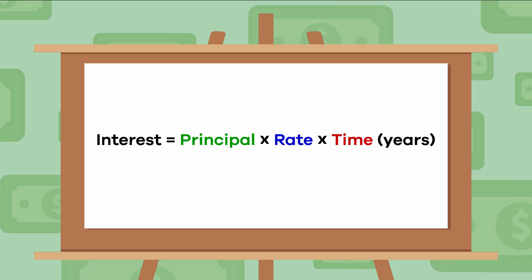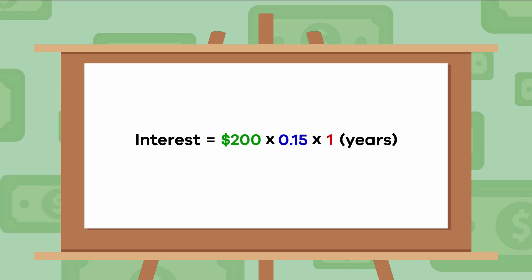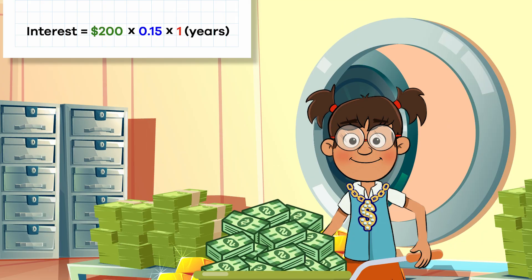Now we are ready to use the equation. First, we know that the principal amount, or the amount that Frankie started with, is $200. Next, we know that the rate equals .15. As for time, we know that the bank calculates their rates yearly, so that number would be one for one year. Based on this equation, how much interest will Frankie have earned in one year?